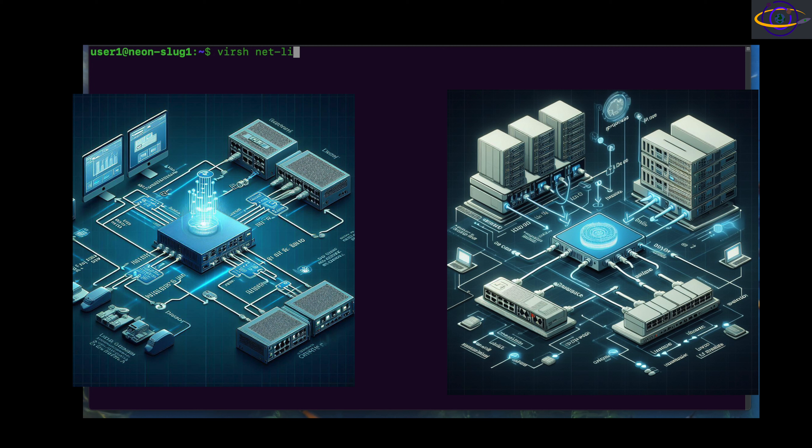Now we're going to set up a bridge network. What that does is create a network bridge that allows VMs to connect directly to the same network that the host is connected to — your hypervisor and all your guest VMs will be on the same network getting IP addresses from that same DHCP pool. By default, without a bridge network, your VMs are NATed on an isolated network and you can only reach them from the host. If you want to connect to them from outside and run services on them, you need to create a bridge network.